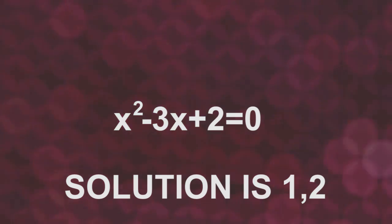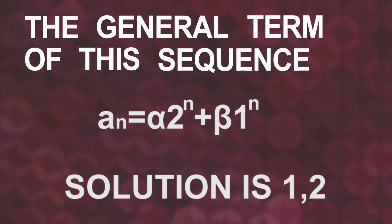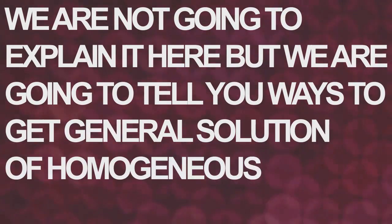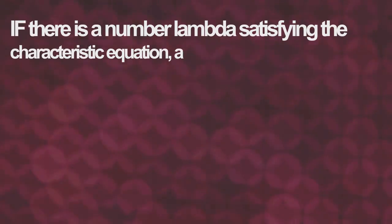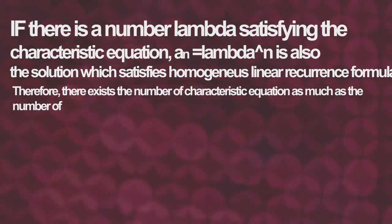Now, important thing is that the general term of this sequence can be written as this. Since proving why the general solution of recurrence formula above takes too long time, we are not going to explain it here, but we are going to tell you ways to get its general solution of homogeneous linear recurrence formula. If there is a number lambda satisfying the characteristic equation, a equals lambda to the n is a solution to satisfy homogeneous linear recurrence formula.